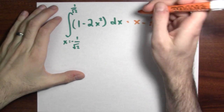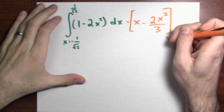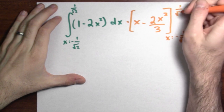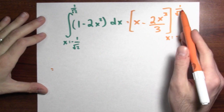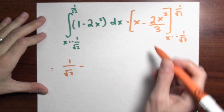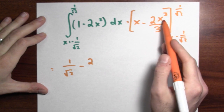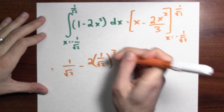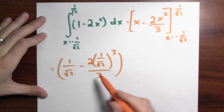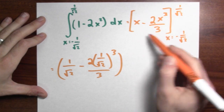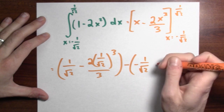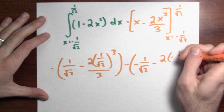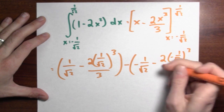Now I'll evaluate my antiderivative at the right and left endpoints. I have to evaluate at 1 over the square root of 2 and minus 1 over the square root of 2, then take the difference. When I plug in 1 over the square root of 2, I get 1 over the square root of 2 minus 2 times (1 over the square root of 2) cubed divided by 3. And I subtract what I get when I plug in the negative value: negative 1 over the square root of 2 minus 2 times (negative 1 over the square root of 2) cubed all over 3.